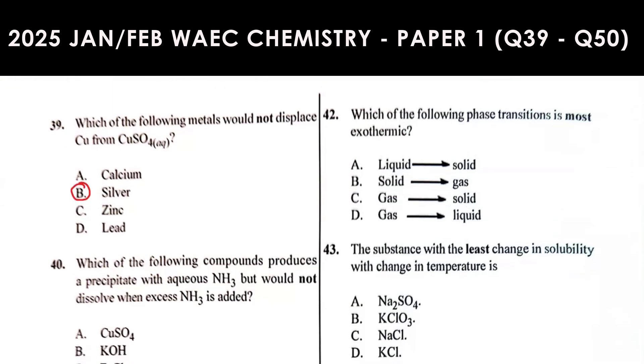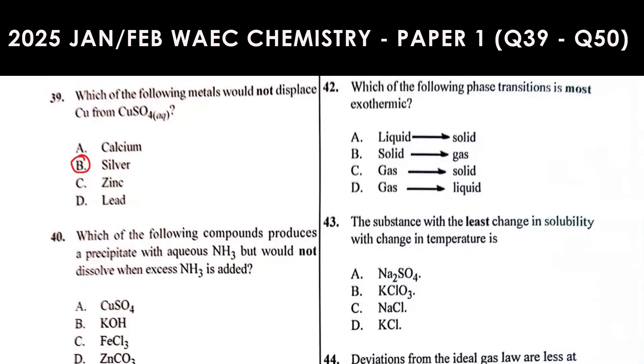Question 40: Which of the following compounds produces a precipitate with aqueous ammonia that would not dissolve when excess ammonia is added? This has to do with qualitative analysis test for cations. Which ions produce precipitate with aqueous ammonia? Zinc ions give white precipitate, aluminium ion gives white precipitate.